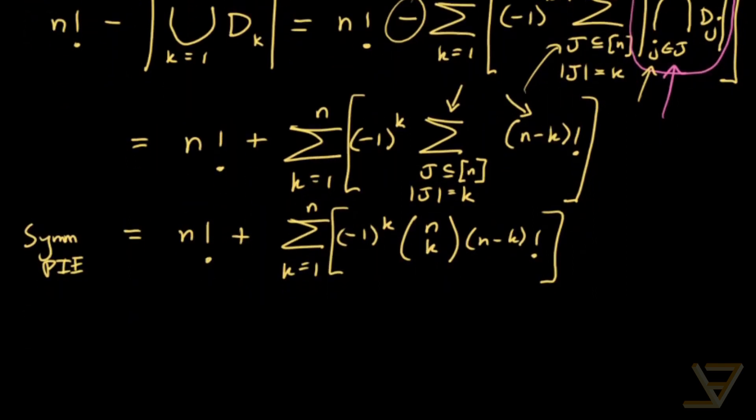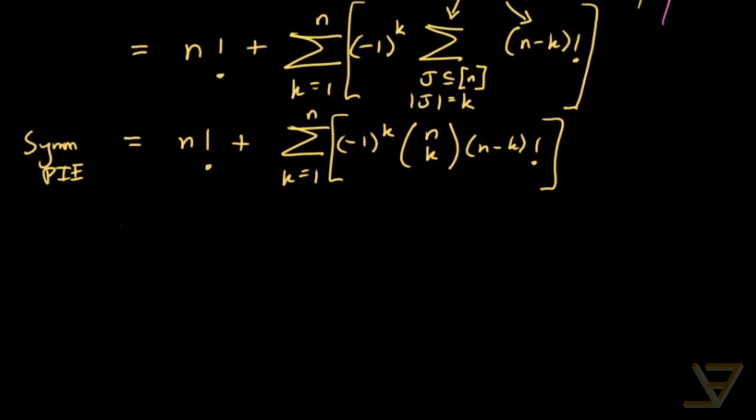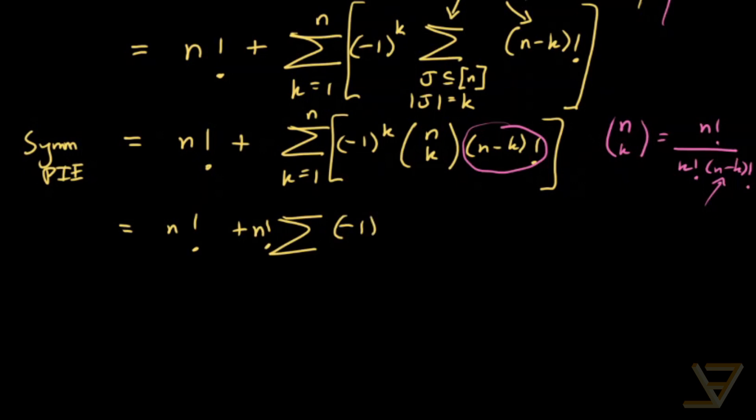And now it's just a simplification process. So we can write this as n factorial plus the sum. n choose k is equal to n factorial over k factorial n minus k factorial. So since we have this over here, we can cancel out this factor here. And we can factor out an n factorial. So we get negative 1 to the k, iterating from k equals 1 through n, over k factorial.